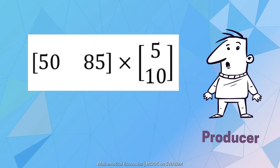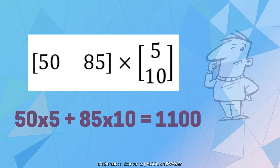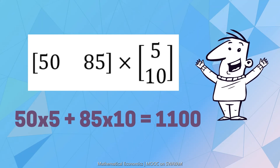Wait, someone is following us — they are vectors, a row vector and a column vector, and they want to get multiplied. Let us help them. We have just done a matrix multiplication, and 1100 is the revenue earned by the producer.